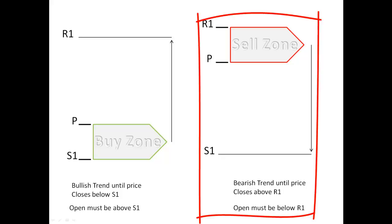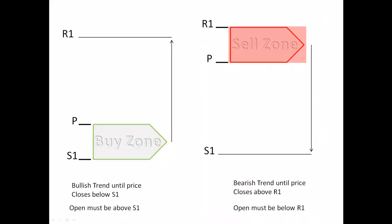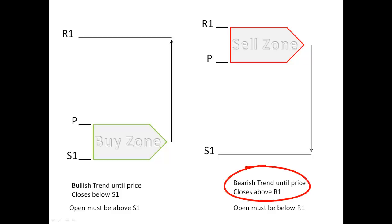In a downtrend — a bearish trend — you want to look to sell in the zone between R1 and the daily pivot. And you're going to be looking for a target of S1 or possibly S2, depending on how strong the trend is. The bearish trend should continue until price closes back above R1.